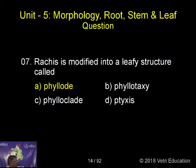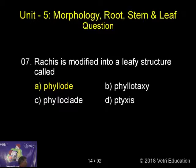The rachis is modified into a leafy structure called phyllode. The terms phyllode, phyllotaxy, and phylloclade are introduced — the correct answer here is phyllode.